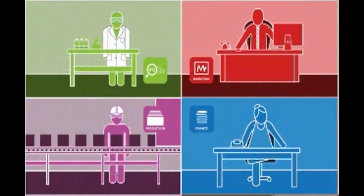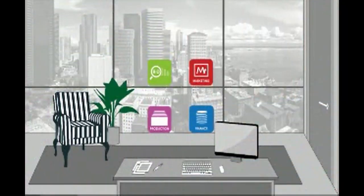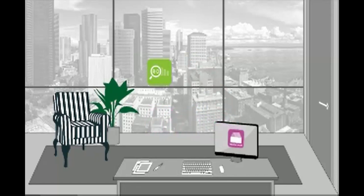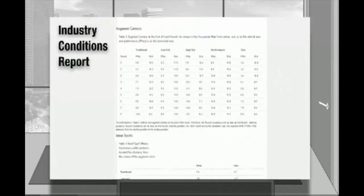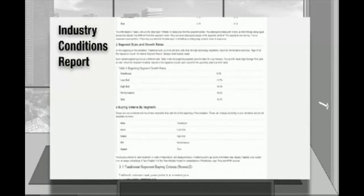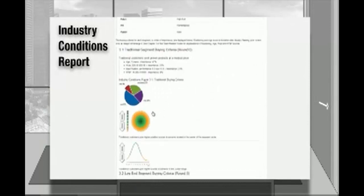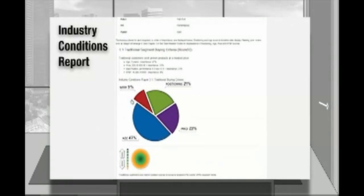Each department needs to communicate with the others to implement your strategy. The best place to start is with analysis — breaking down both your industry and your company. Once you know the company's strengths and weaknesses and the potential of the market itself, you'll be able to create a vision for the future. Start with the industry conditions report, which gives you the parameters for your specific industry. Using this report and an industry newsletter called the Capstone Courier, you have all the information you'll need to begin your analysis.